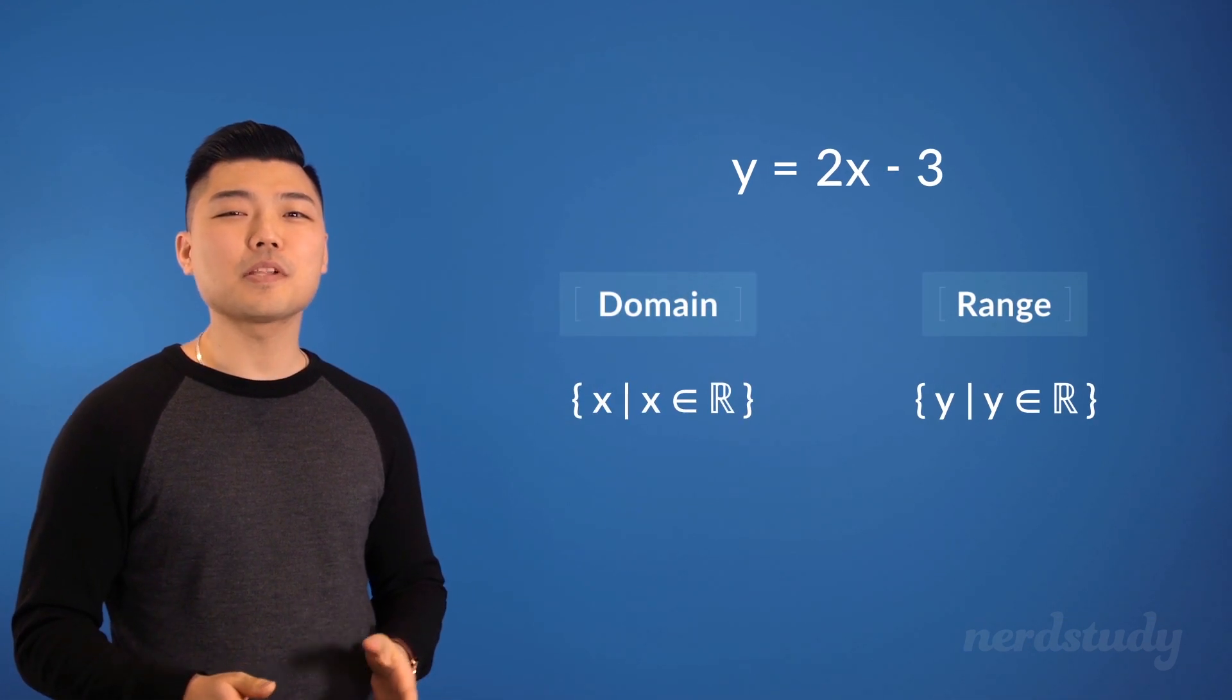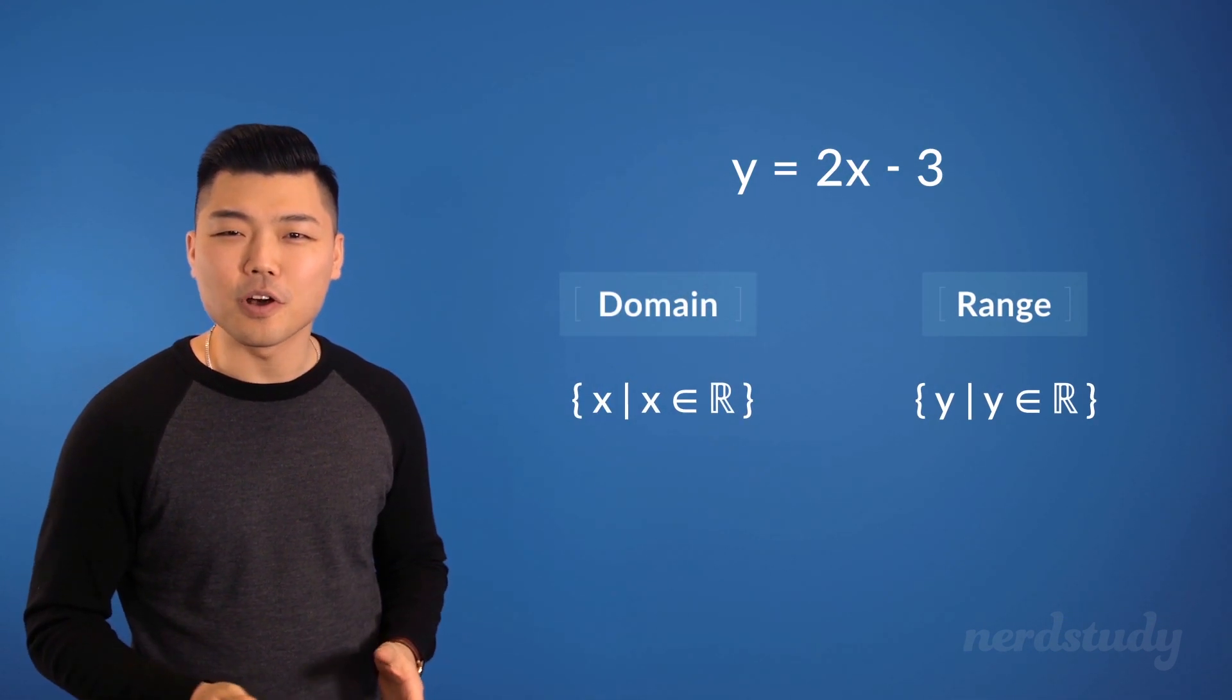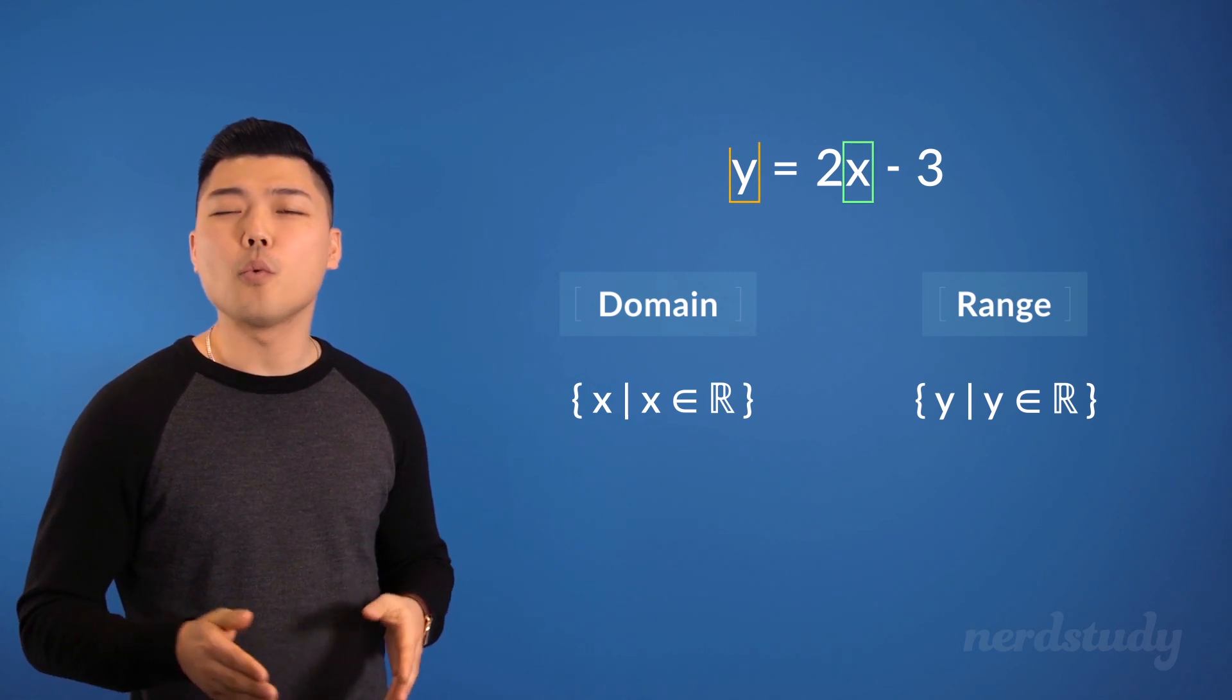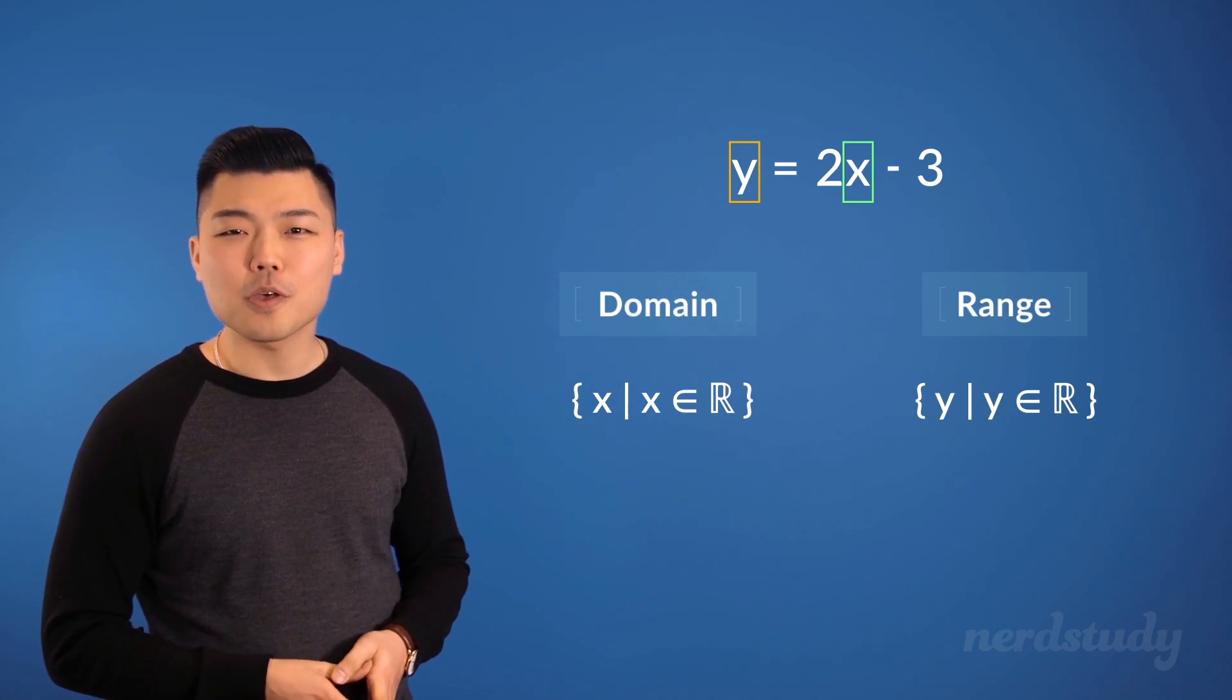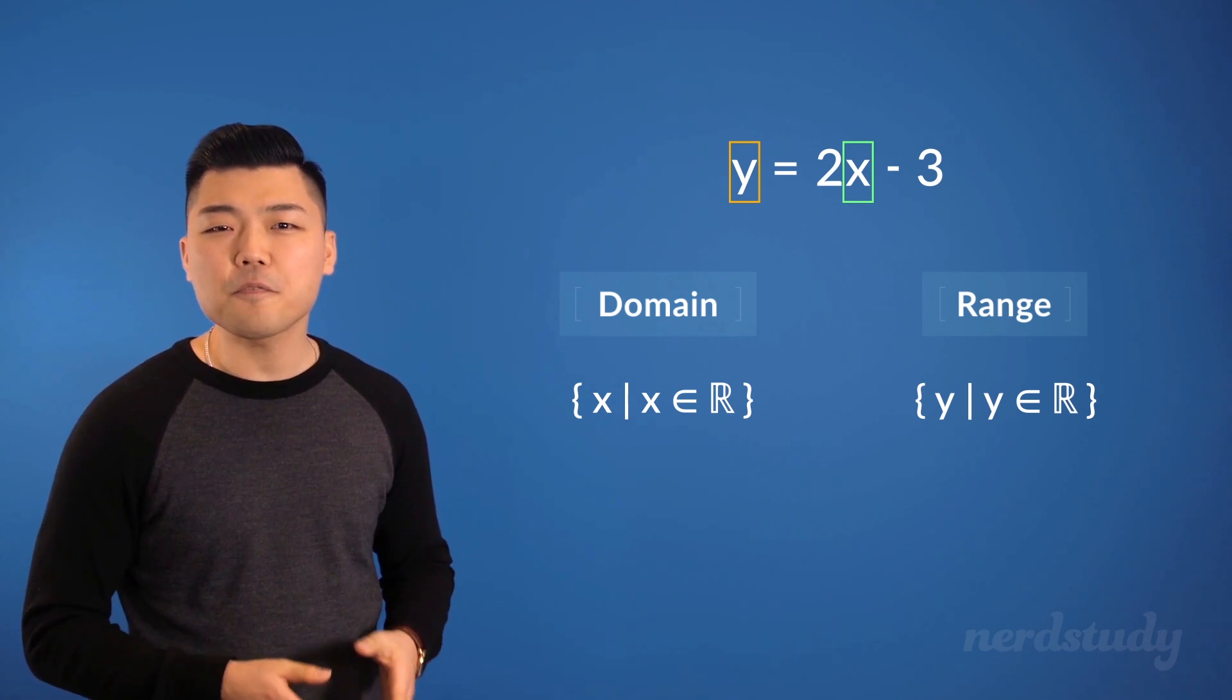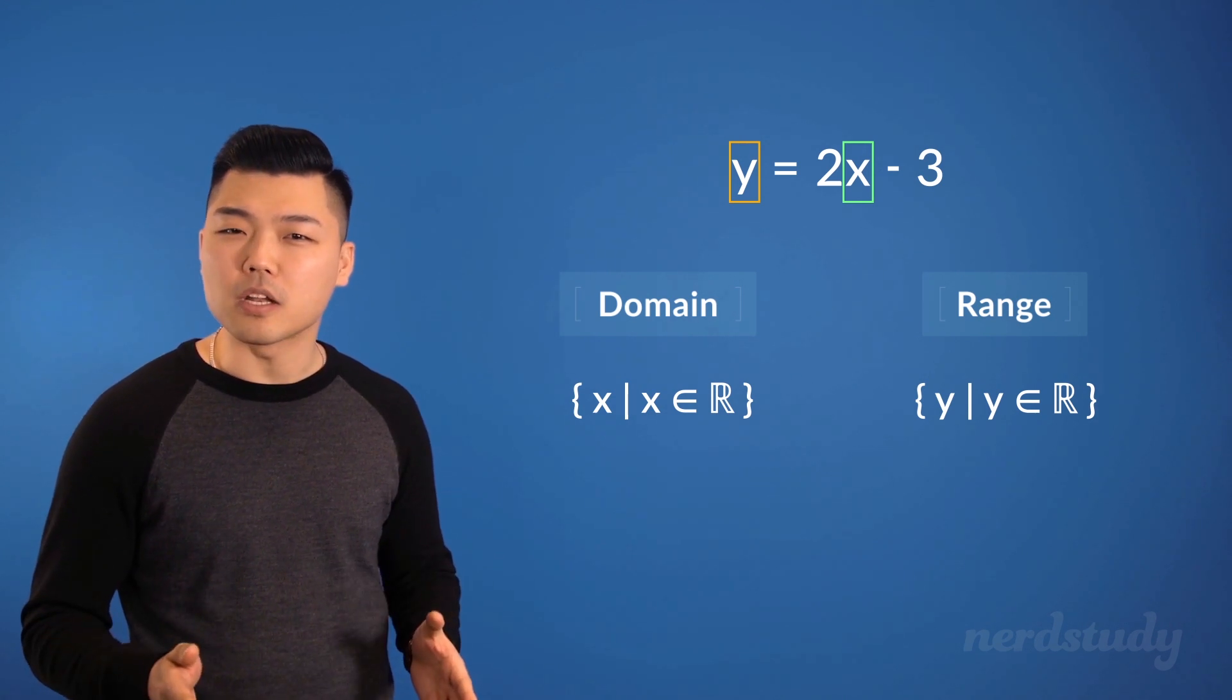So, it seems like for this linear function, that there wasn't much limitation on what x can be and what y can be. But let's look at some more interesting scenarios, so that we can get a good grasp of the different situations that we might see for both the domain and range.